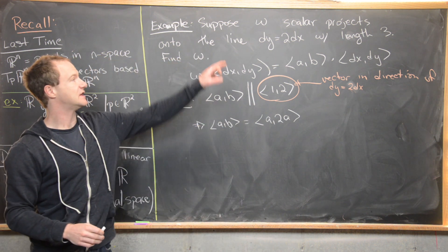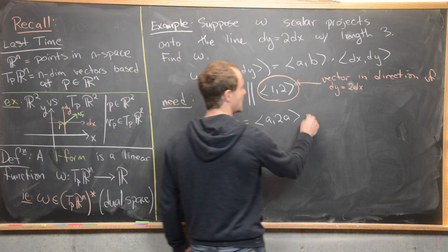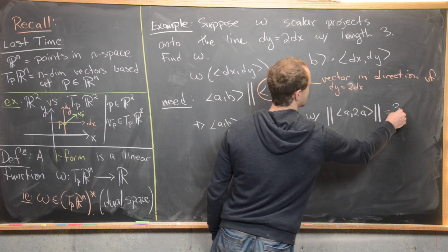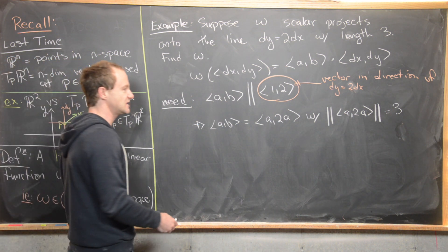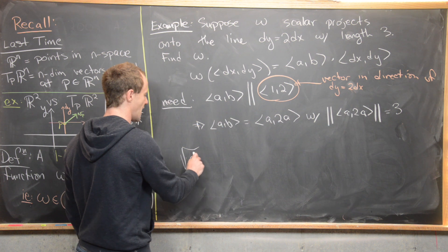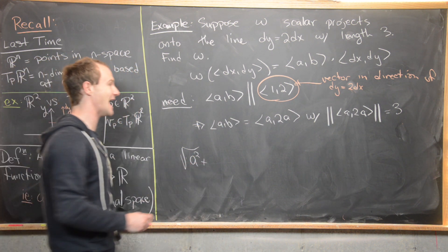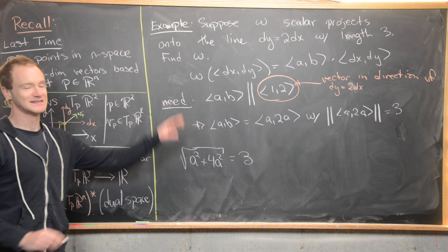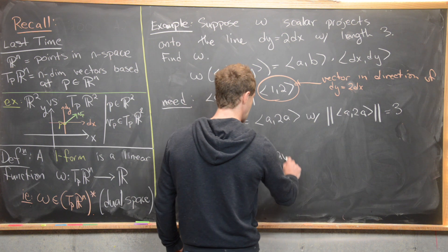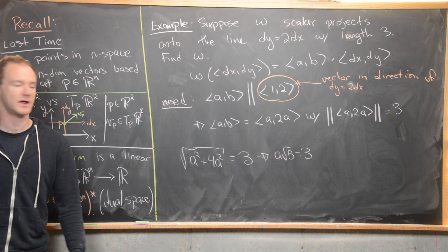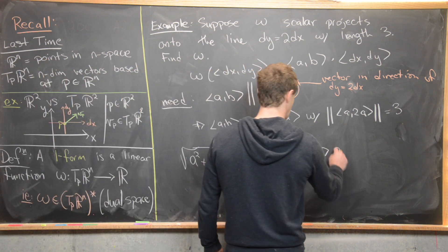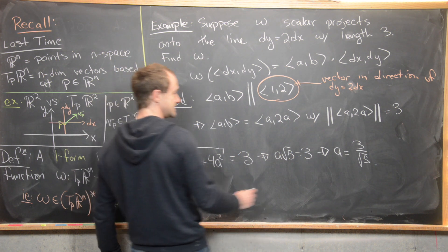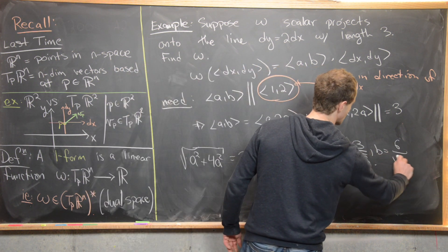Great. Now we need to use the fact that this needs to have a length of three. So in other words, we need to take the length of this thing (a, 2a) and set it equal to 3. And so now let's recall that the length of a vector is the square root of the sum of the components squared. So we have the square root of a² and then 4a² equals 3. So that's that length condition. But that's going to be the same thing as a times the square root of 5 equals 3, because notice we've got 4 + 1. But that tells us that a equals 3 over the square root of 5. So not so nice, but that's okay. And so what that tells us is that b is equal to 6 over the square root of 5.